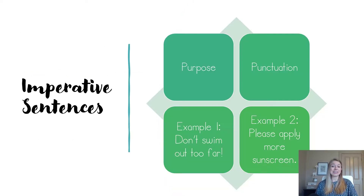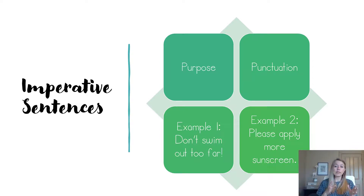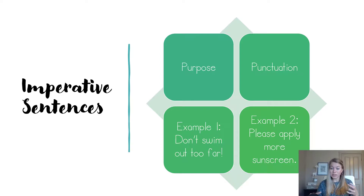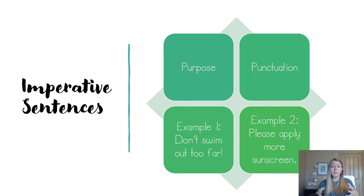Next, third, is imperative sentences. Imperative sentences make commands or they tell somebody to do something. This one is a little trickier, though, because it means you have some choices on the punctuation you end up using, and the punctuation you use is going to change the tone or the sound of that command. Example one: the speaker used an exclamation point, which made their command much more forceful, when they said: don't swim out too far!